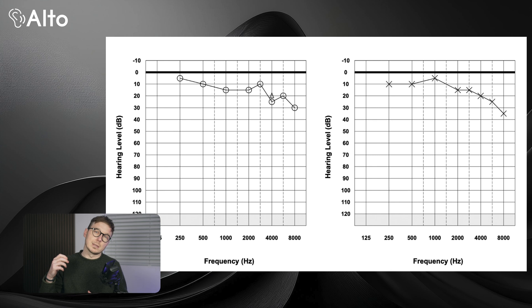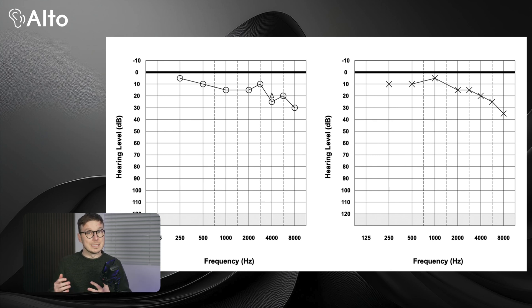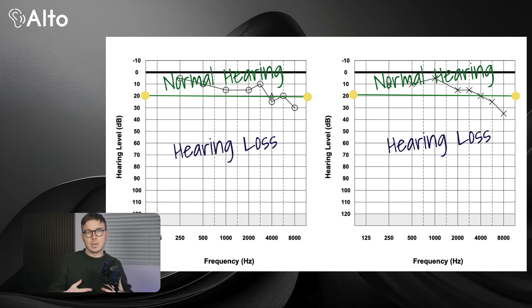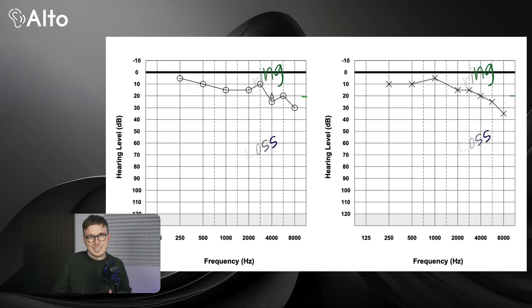And just as important as the frequencies we test is where your results fall in terms of loudness. If your points are near the top, above 20 dB or 20 decibels, your hearing is classified as within normal limits. If they drop lower, we classify the hearing loss based on how much volume is needed before you can detect a sound.